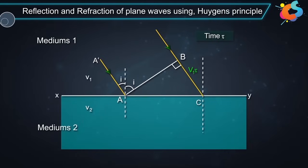During the same time tau, the secondary wavelet from A will travel a distance of V2 tau in the denser medium. To determine the shape